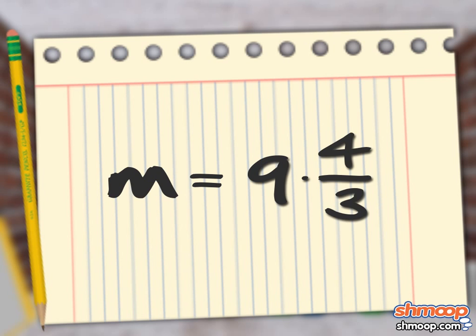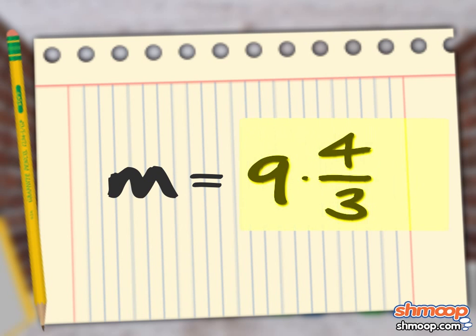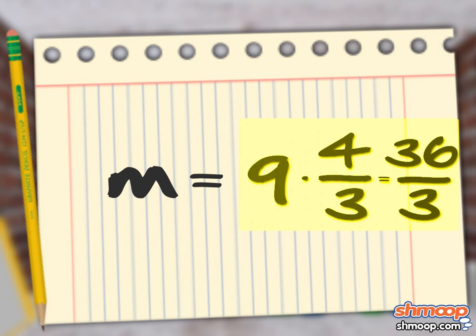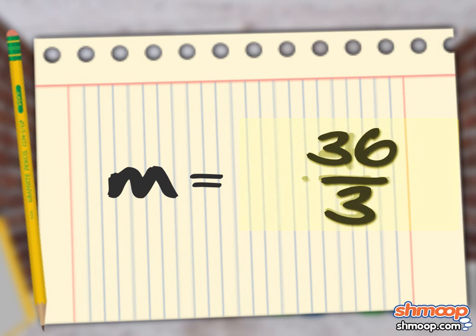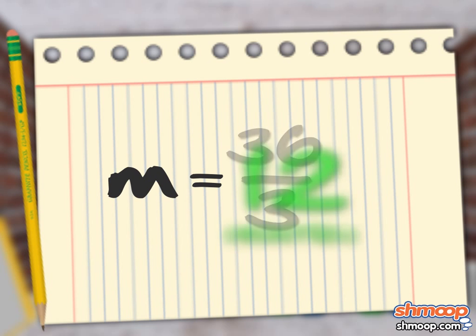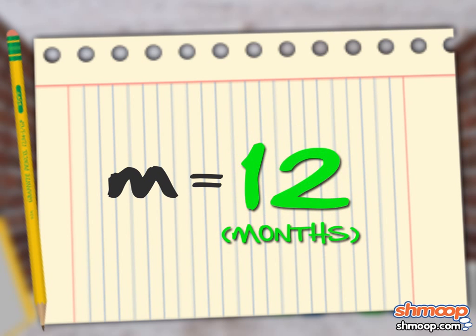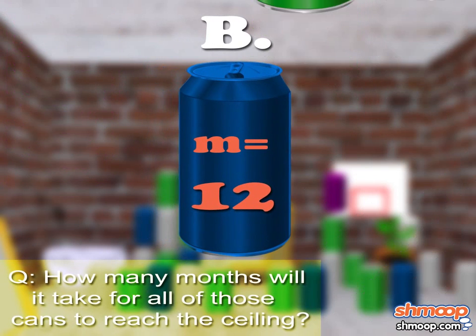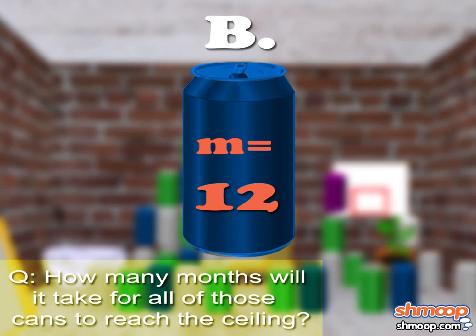Multiply nine by four over three to get thirty-six over three. Simplify that to get twelve. And the answer is B. M equals twelve.